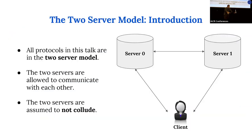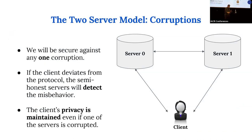Everything in this talk is in the two-server model, where the client talks to two servers at once. The two servers are allowed to communicate with one another, but the main assumption is that at least one of the servers is always honest.